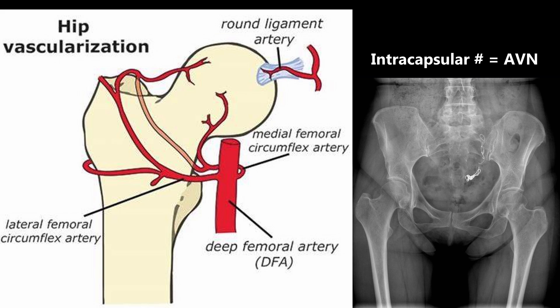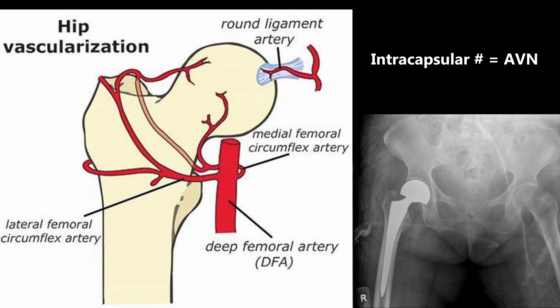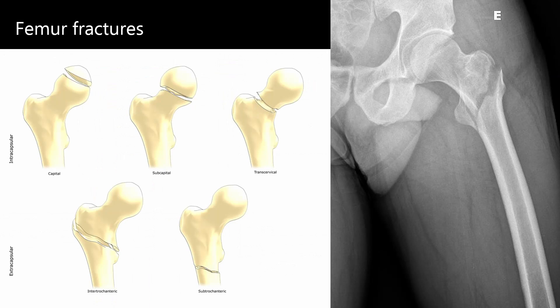These patients therefore require a hip replacement as the femoral head is unlikely to heal and reunite with the rest of the femur due to the poor blood supply. Extracapsular fractures don't usually cause avascular necrosis, so can be internally fixated with a dynamic hip screw.